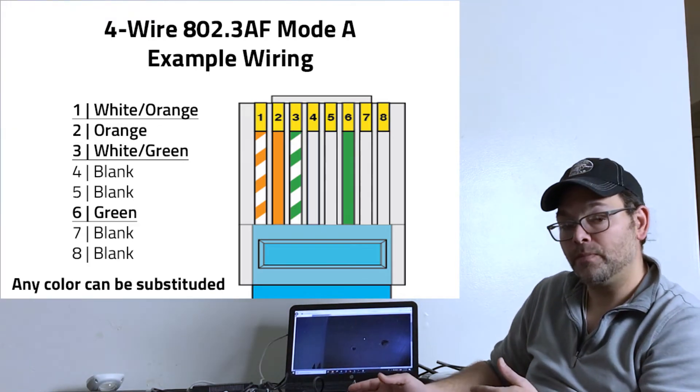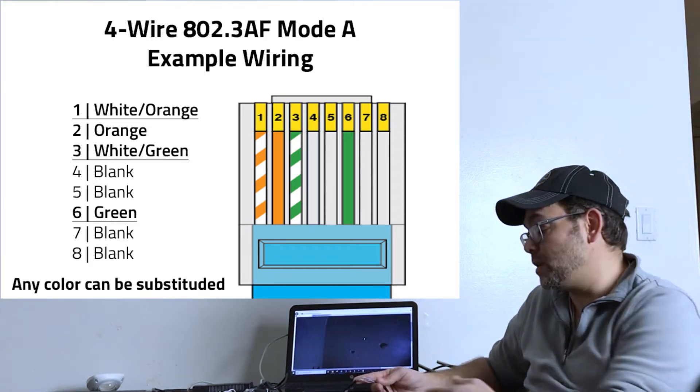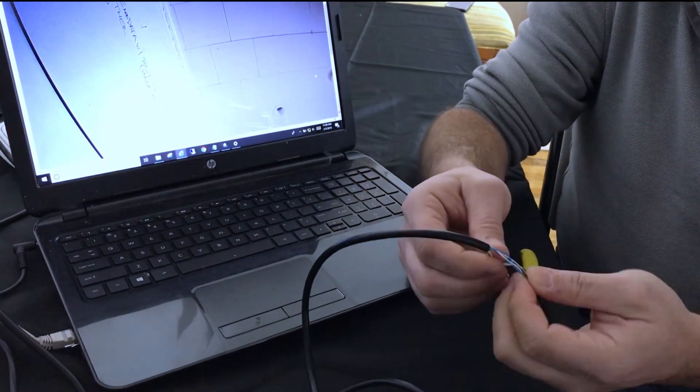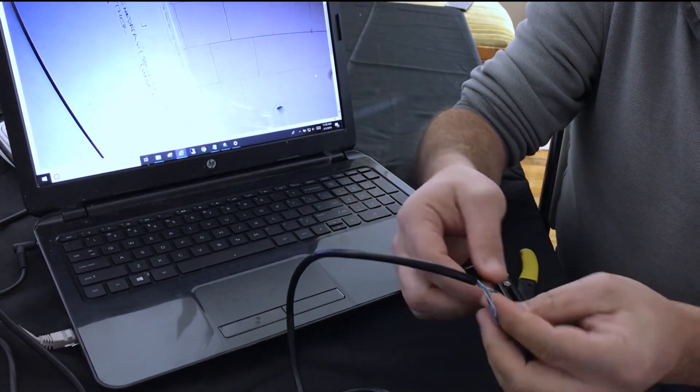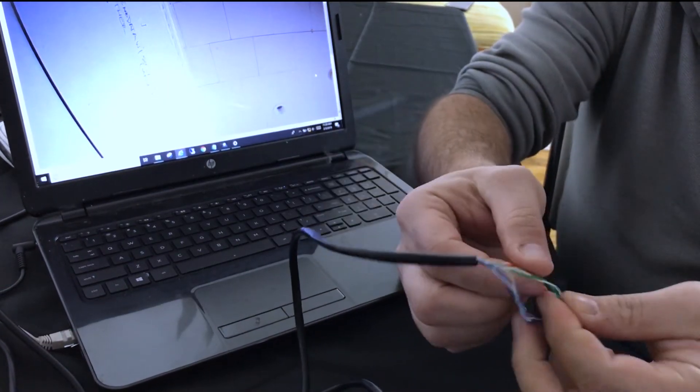While I demonstrate it, what we're going to be doing right now is I'm going to be cutting the cable here. So here we have the four pairs, eight wires. I have connected to pins one, two, three, and six, the orange and the green pair.